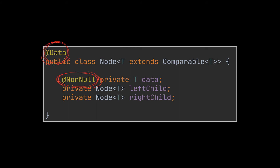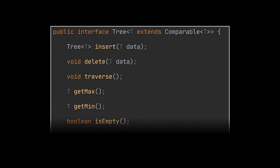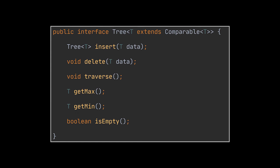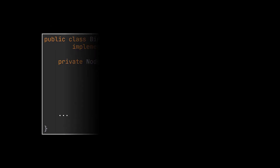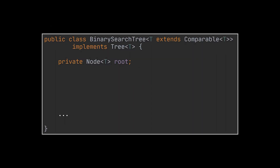Now, before diving into the actual implementation, let's create a tree interface for the binary search tree where we will define all the operations a tree can offer. These are the operations we covered in this video. So, after implementing this tree interface, we should be able to insert an item to the tree, delete an item from the tree, traverse the tree, retrieve the maximum or minimum value stored inside the tree, and check whether the tree is empty or not. This class contains only a single node — the root node. This node, similarly to the root of a linked list, is enough to access the whole tree. If the root is equal to null, then the tree must be empty, and that is the condition we used to implement the isEmpty operation.